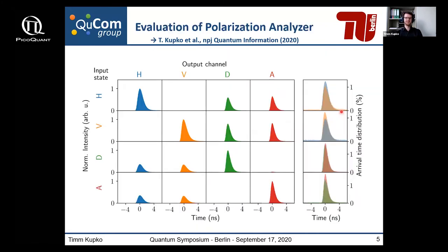We evaluated our polarization analyzer by putting a fixed polarization into our system and looking at the response of the different detection channels, examining time-resolved photoluminescence measurements. When we input an H-polarized state, we obtain mainly H/V basis detection events in the correct channel. However, in the opposite basis we have equal projection to both diagonal and anti-diagonal states, as reproduced in our measurements.